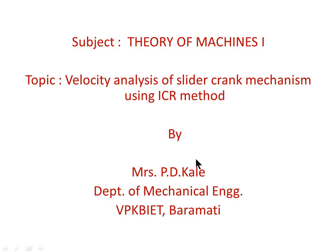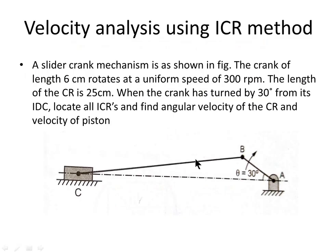Let us consider an example of a slider crank mechanism as shown in the figure. The crank of length 6 cm rotates at a uniform speed of 300 RPM. The length of the connecting rod is 25 cm. When the crank has turned by 30 degrees from its IDC, locate all ICRs and find the angular velocity of the connecting rod and velocity of the piston.